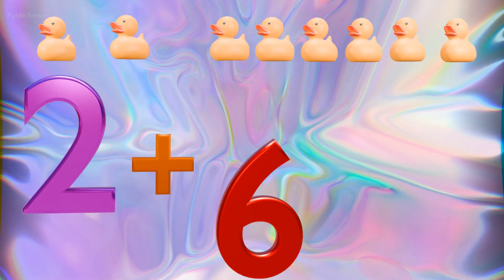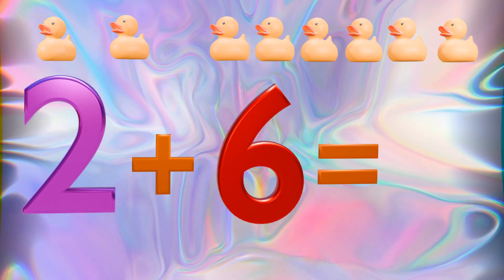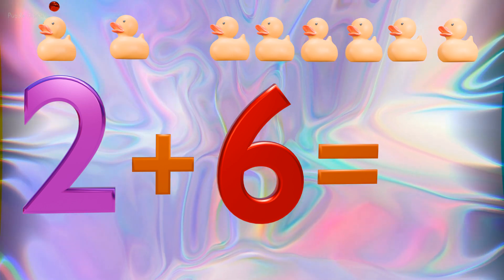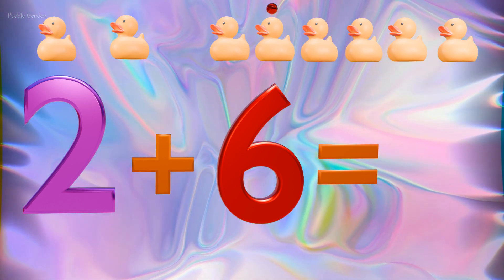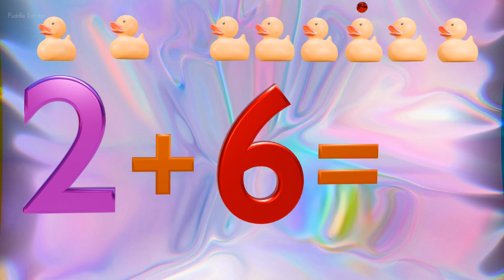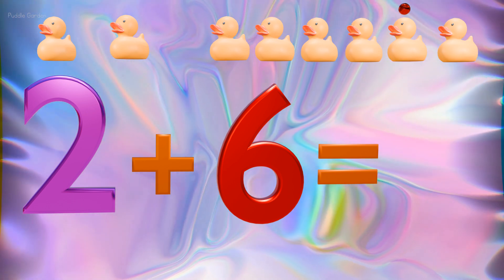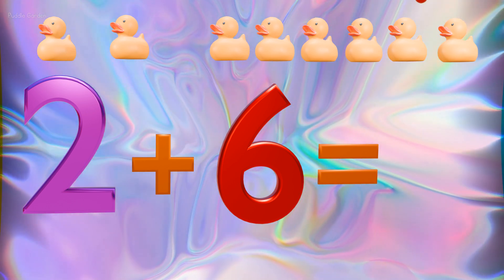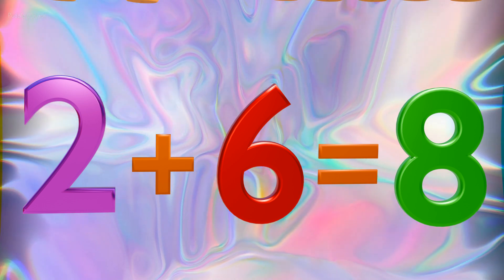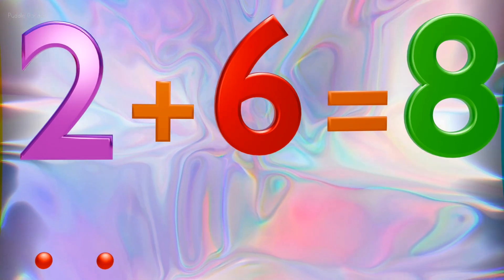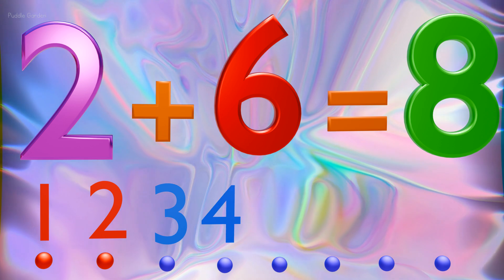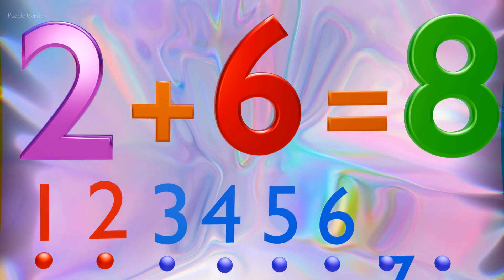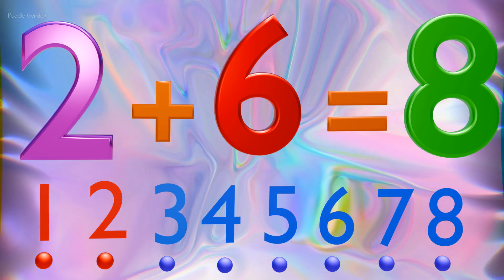2 plus 6 more equals 1, 2, 3, 4, 5, 6, 7, and 8. 2 plus 6 equals 8, all together. Or if we're starting from 2 and we're going to jump forward 6 numbers, that means we're going to count on 6.